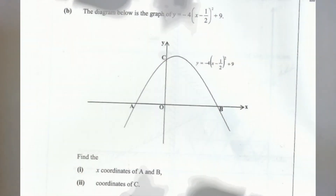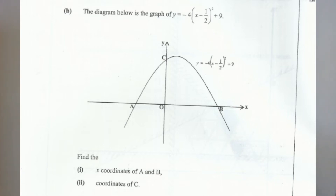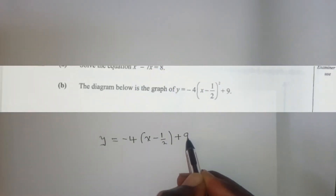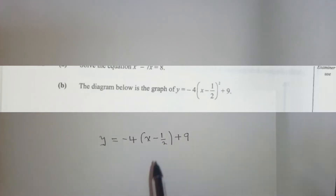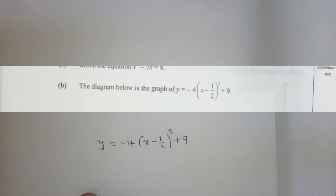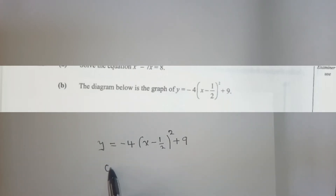For question 22b, the equation looks like this. In order to find x, we're going to use the method of completing the square. We let y equal to zero.